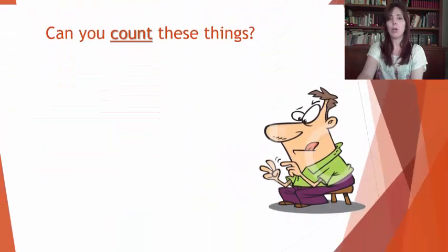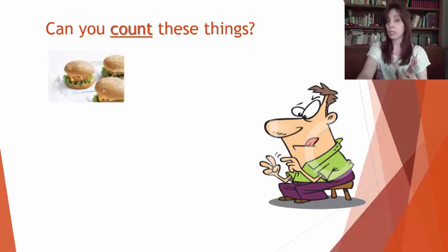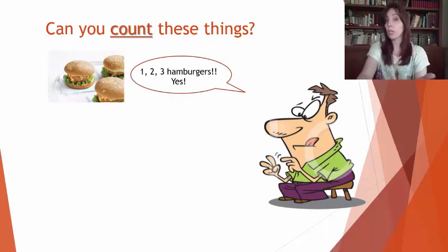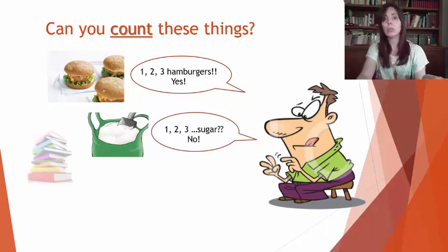What is the complication? We have to check on the object, the noun, that we are going to describe. Very important concept. Can you count these things? For example, hamburgers. Yes, you can say one, two, three hamburgers. What about sugar? No, you can't say one, two, three sugar. That would be impossible. So that's uncountable.